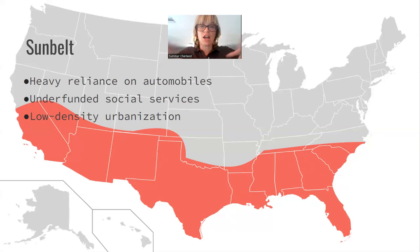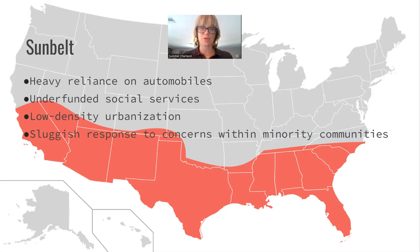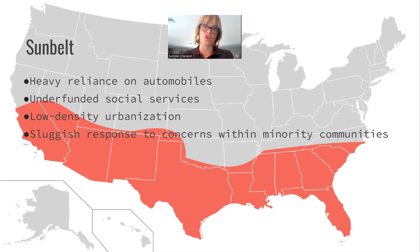The sunbelt also features low-density urbanization — spread out rather than vertical like skyscrapers in New York City. There are still lots of people, but they're spread out more. There are also sluggish responses to concerns within minority communities: throughout the sunbelt, the government doesn't really respond to concerns among people of color — African-Americans, Mexican-Americans, Asian-Americans, Native Americans — who through this class we've learned have been in Phoenix and Arizona for the whole of history.